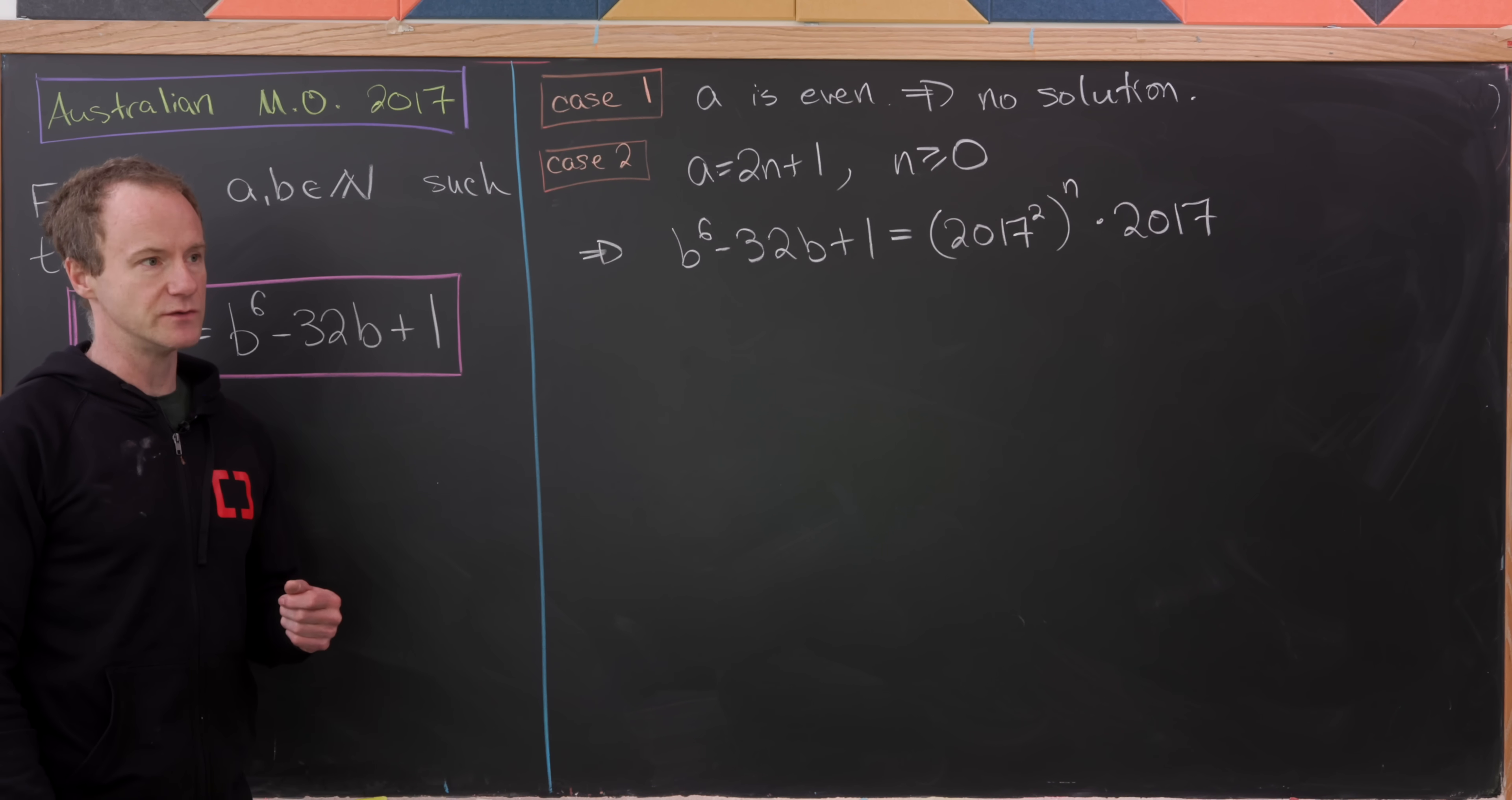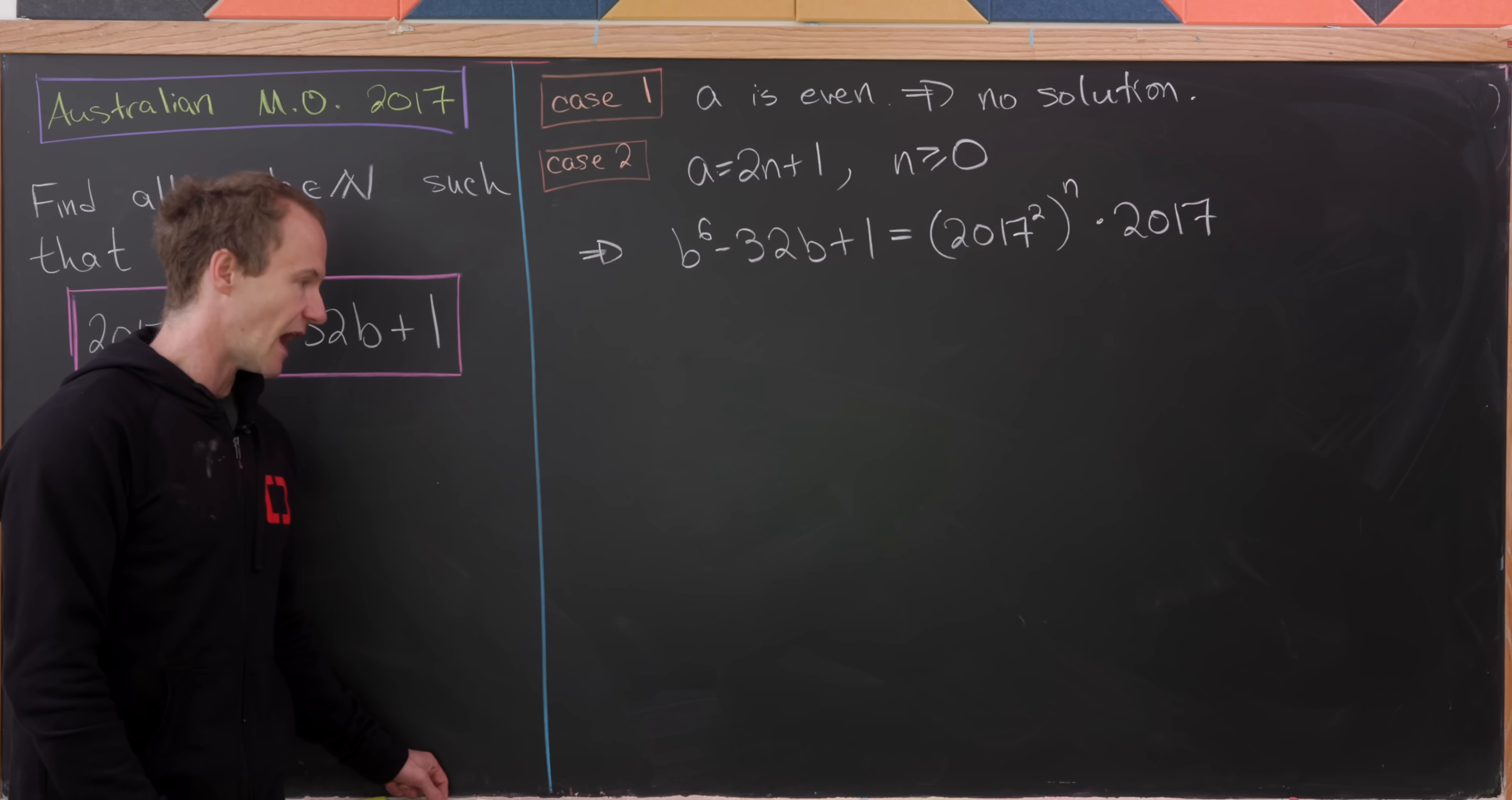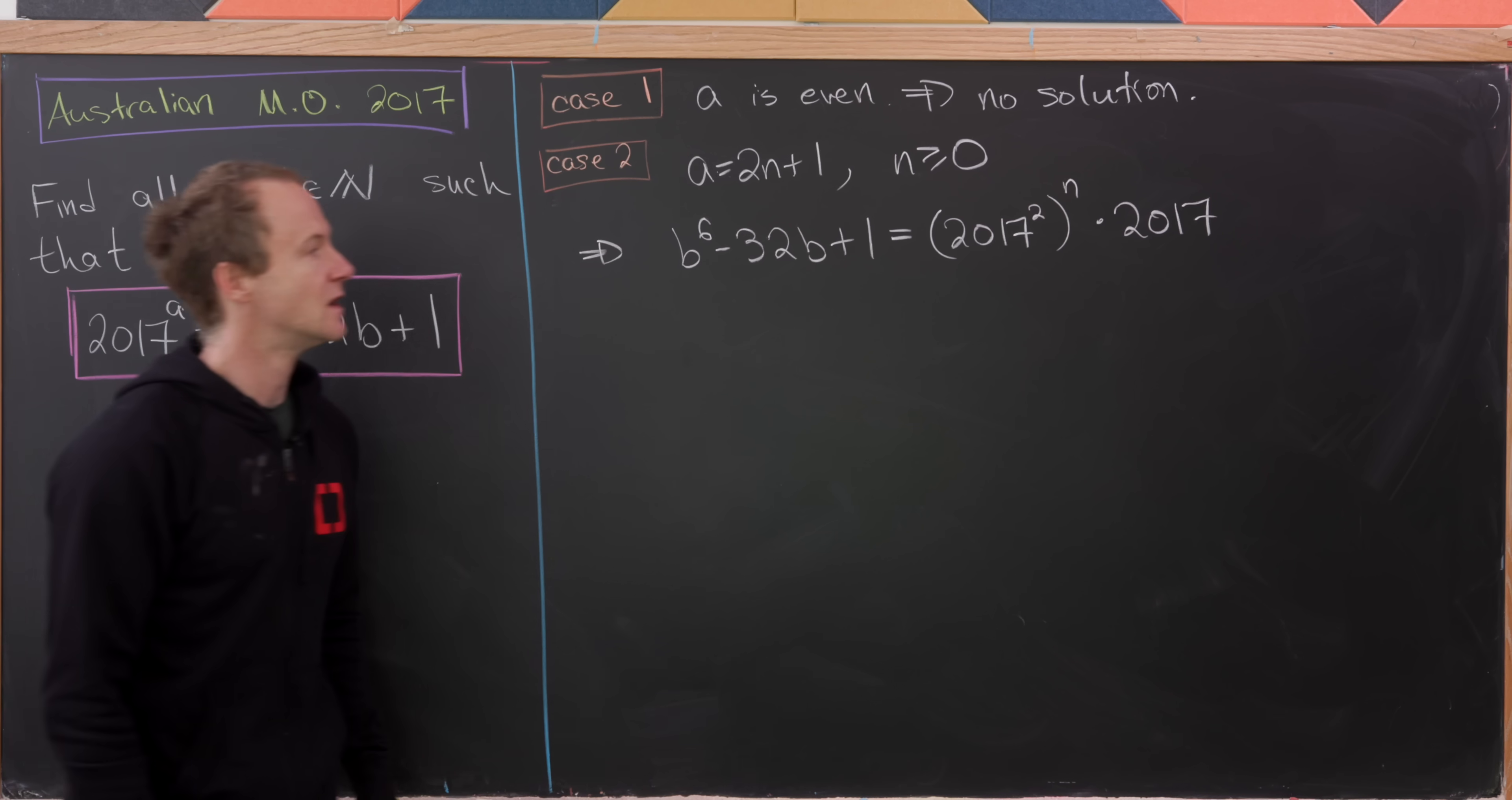And now we're going to use a different trick than we did before. Before we used a kind of a standard technique in these types of problems where we pinned this polynomial in B between two perfect squares, two consecutive perfect squares. And for this next case, we're going to use modular arithmetic and use the fact that only certain numbers are perfect squares if we pick the modulus carefully.